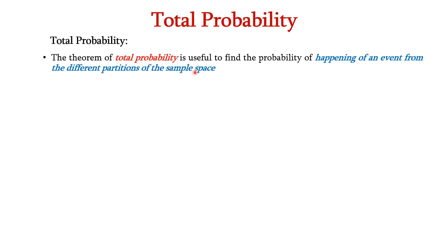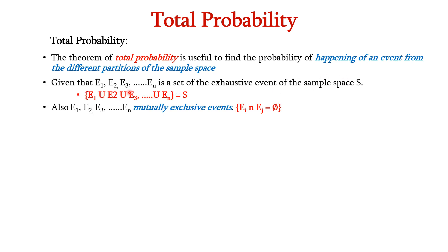The theorem of total probability is useful to find the probability of happening of an event from the different partitions of the sample space. Given events e1 to en which are part of the sample space S, we can express it as e1 union e2 union up to en equals S. The events are mutually exclusive, meaning there is no dependency between two events.